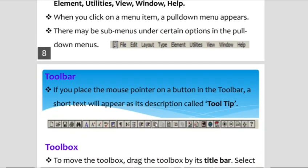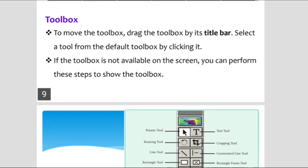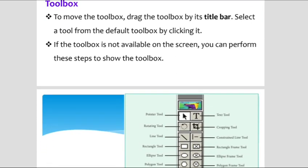Next is the toolbar. If you place the mouse pointer on a button in the toolbar, a short text description called a tooltip will appear. Some tools are represented in the toolbar and are used to perform document work. Next is the toolbox.